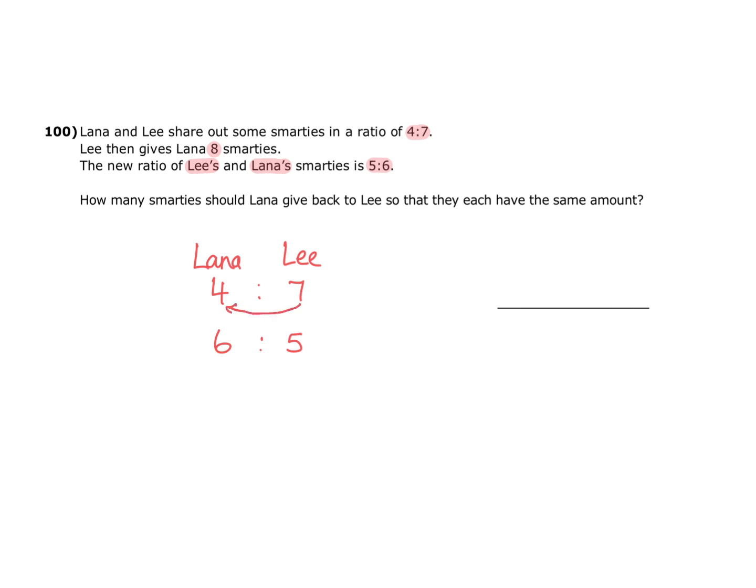So Leigh gives Lana 2 Smarties and he does that 4 times. 2 times 4 is 8. 7 multiplied by 4 is 28. And of course 4 multiplied by 4 is 16.